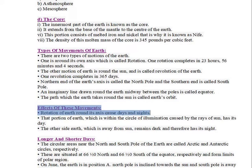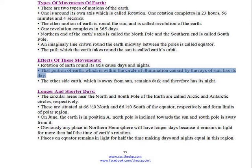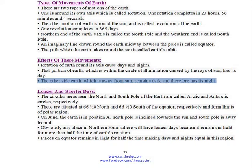Rotation of Earth round its axis causes days and nights. That portion of Earth which is within the circle of illumination caused by the rays of the Sun has its day. The other side of Earth, which is away from the Sun, remains dark and therefore has its night.